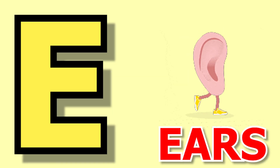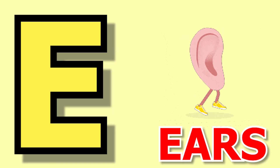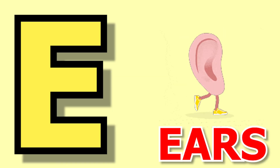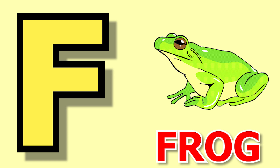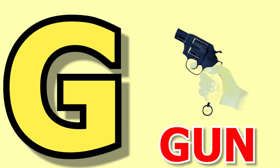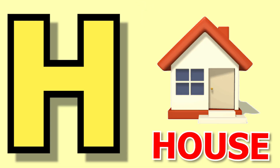E for ear, ear means kaan. F for frog, frog means mandhak. G for gun, gun means banduk. H for house, house means ghar.